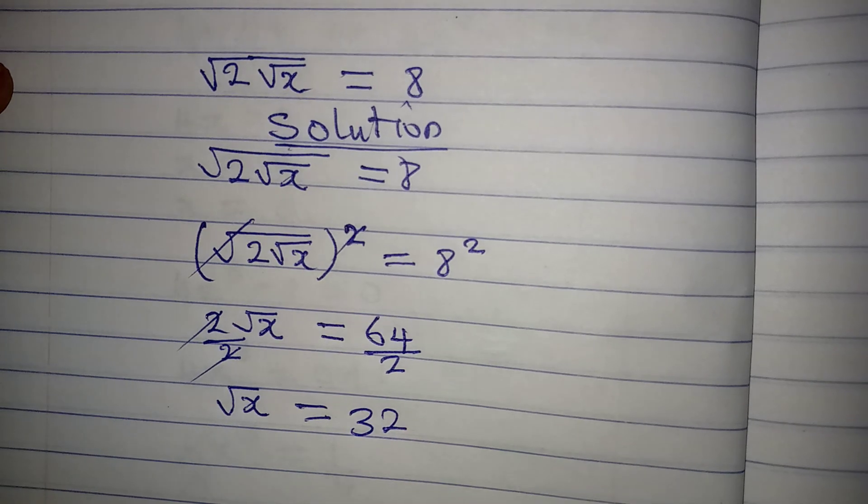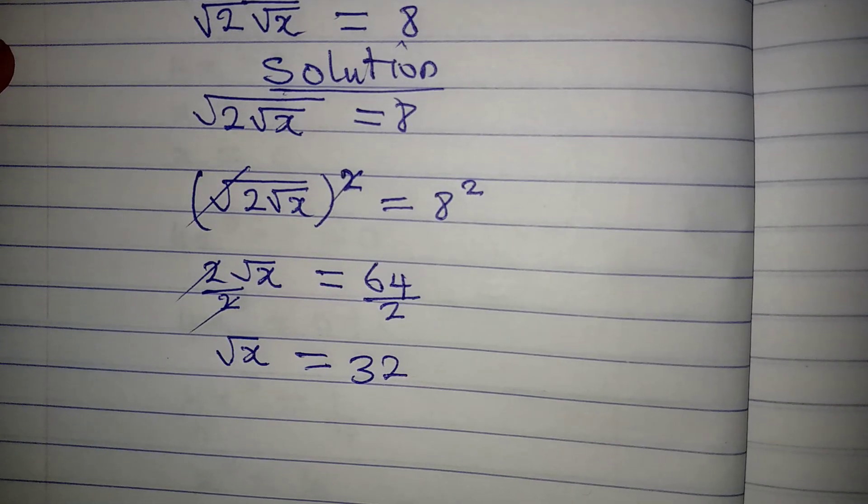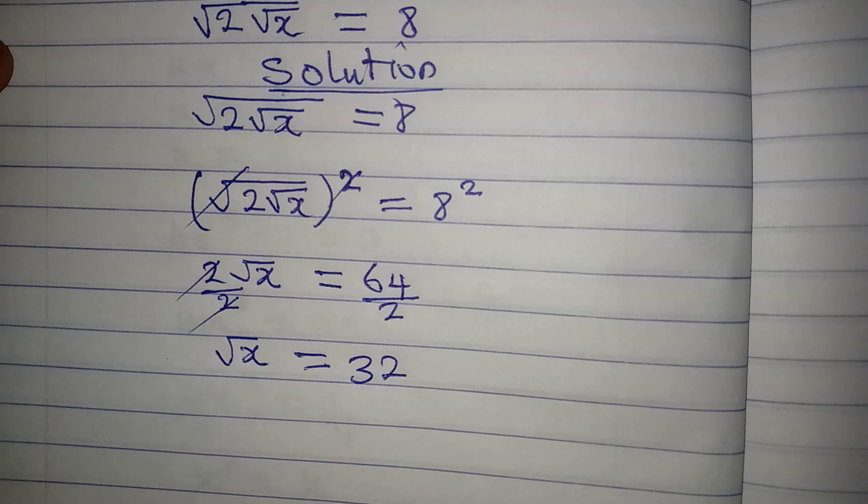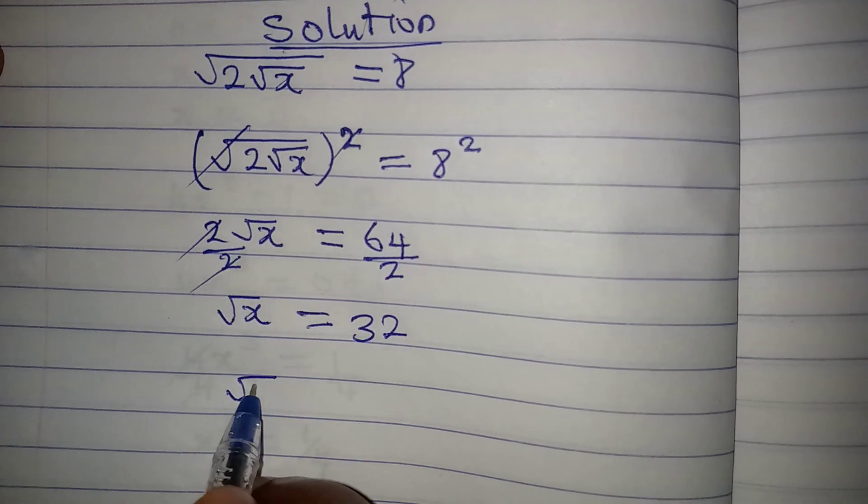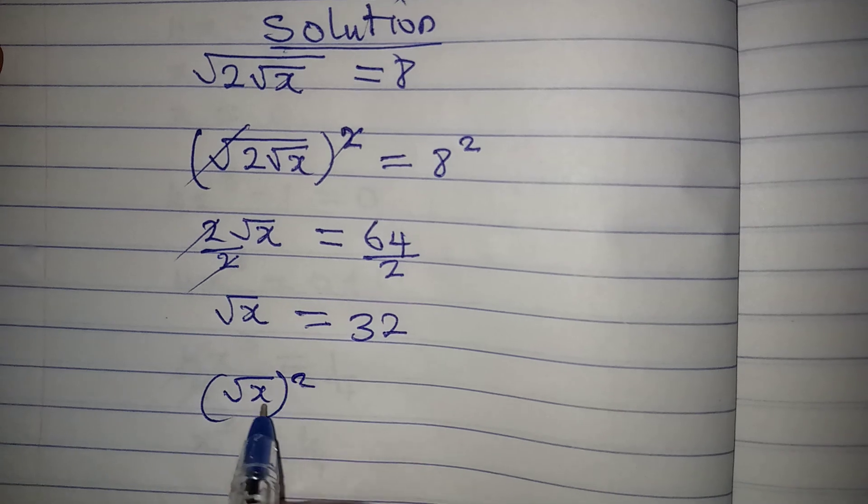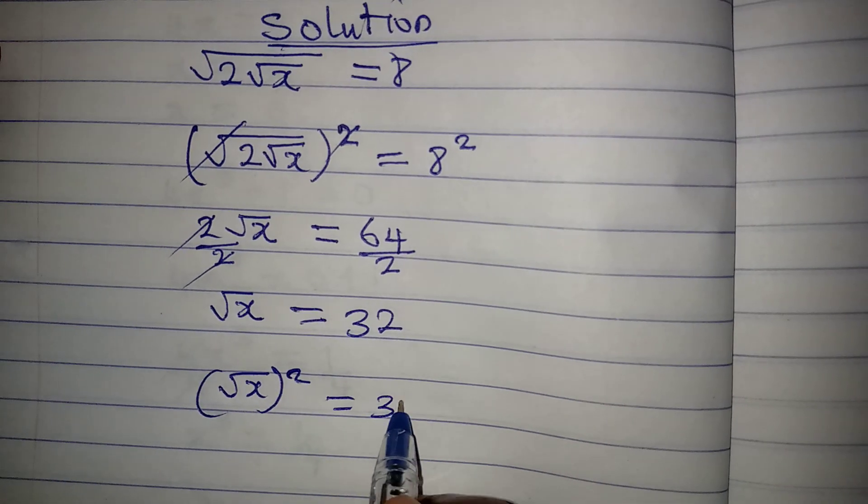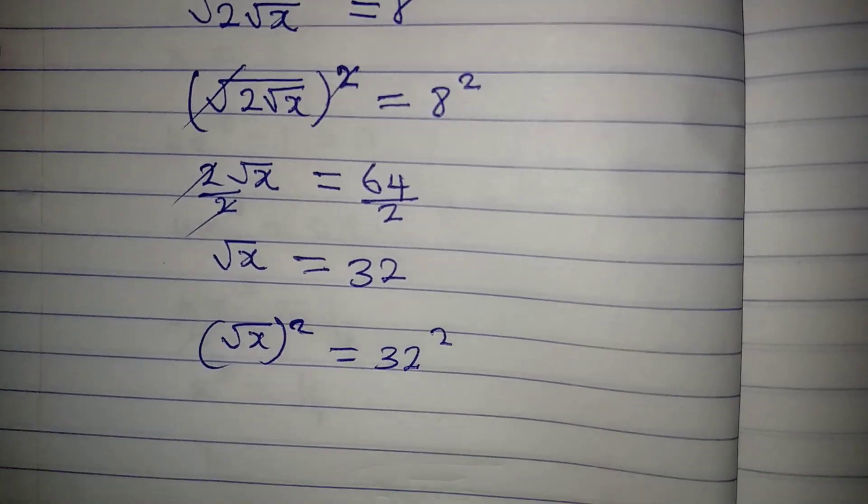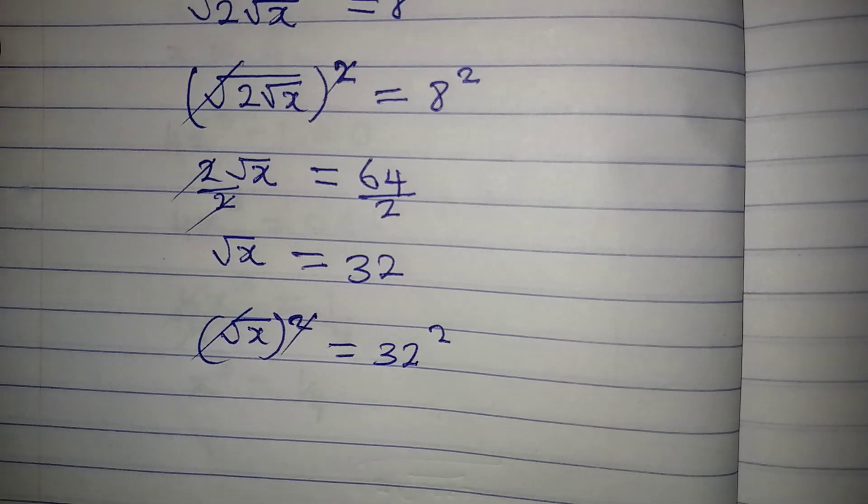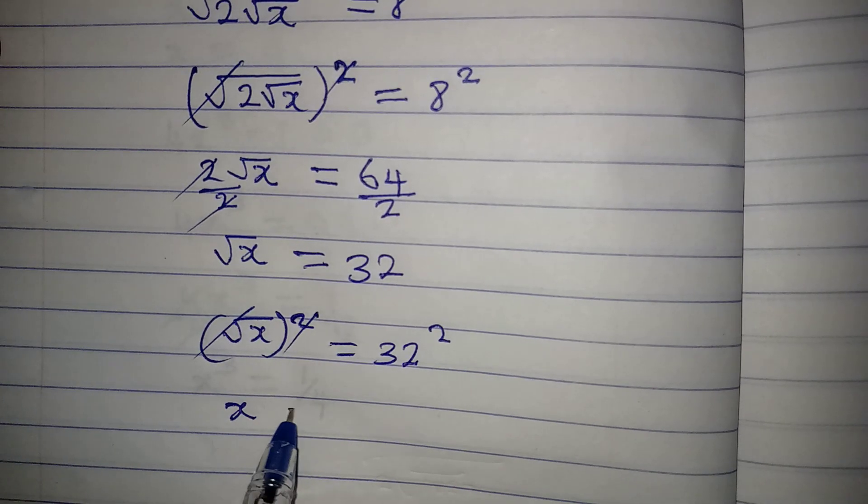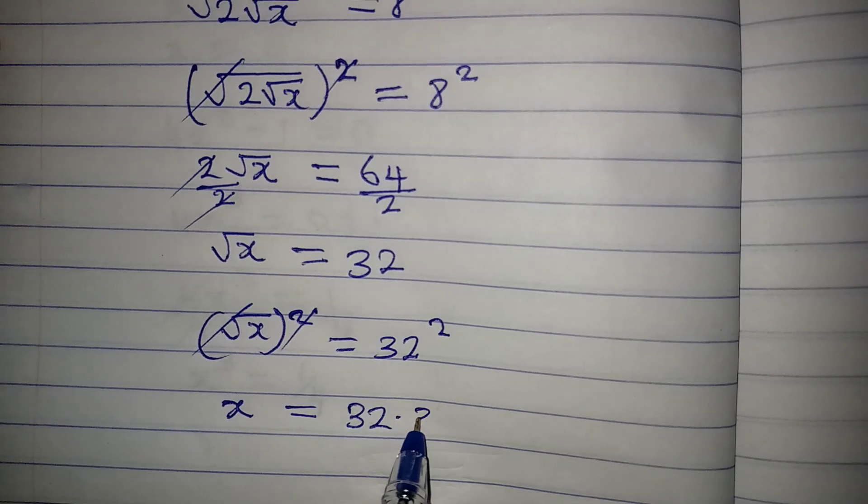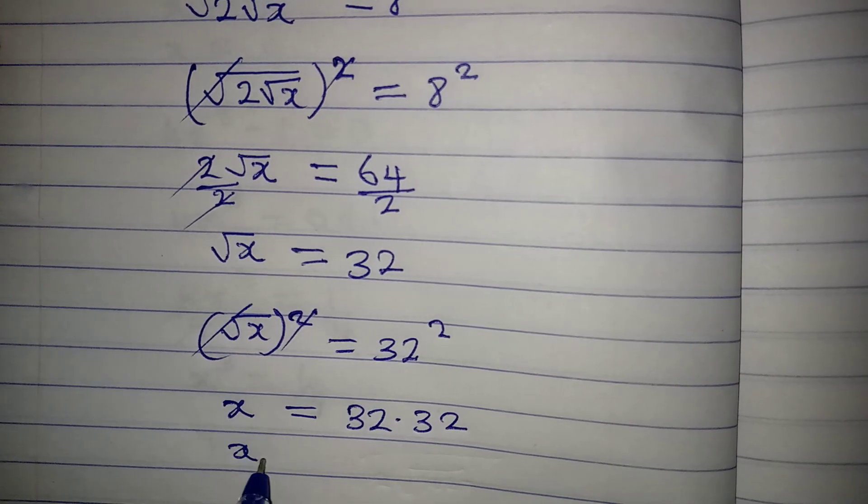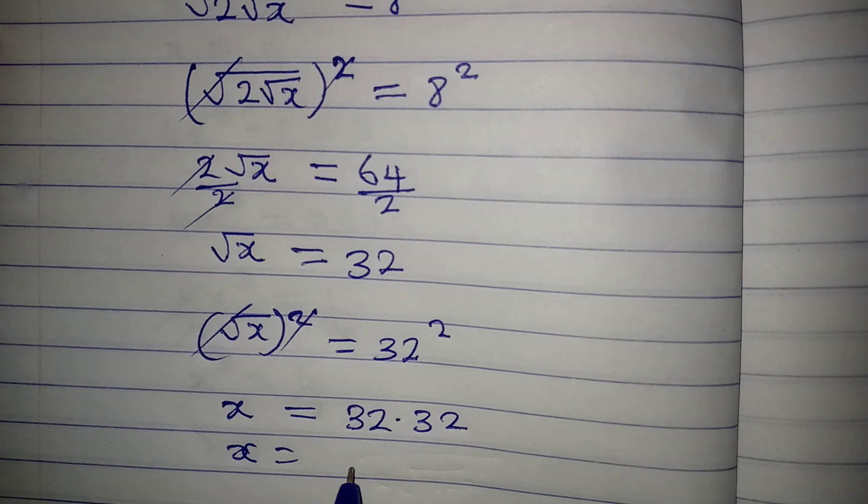Now the next target is to remove this square root. We have square root of x squared equal to 32 squared. Then our x will be equal to 32 multiplied by 32, so our x is equal to 1024.